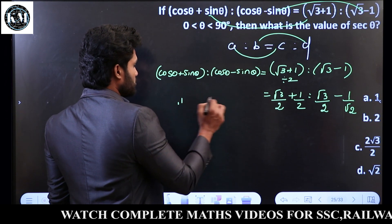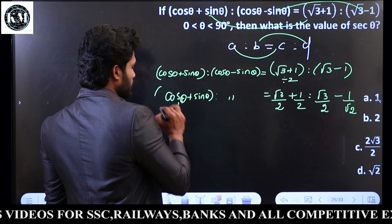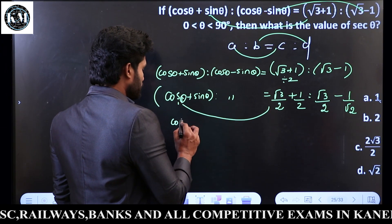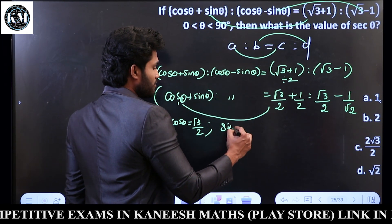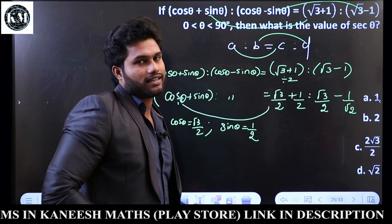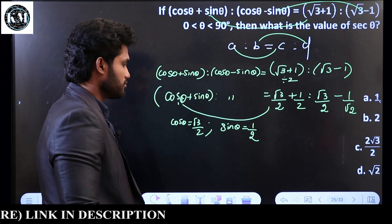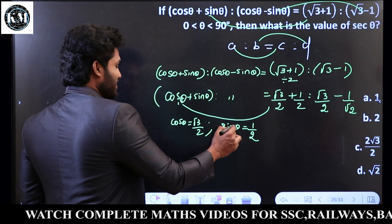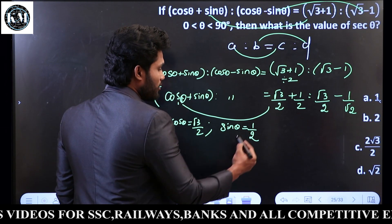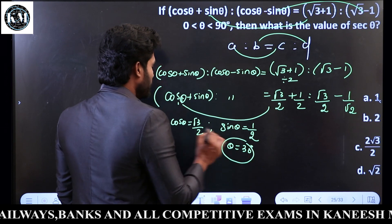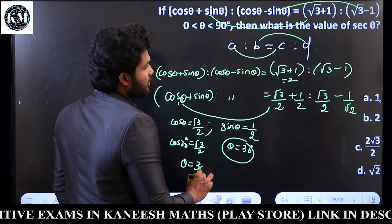If we look at cos θ plus sin θ: the cos θ value is root 3 by 2 and sin θ value is 1 by 2. What value gives root 3 by 2? That is 60 degrees. But sin θ = 1/2 means θ = 30. And cos 30 = root 3 by 2. So the theta value is 30 degrees.